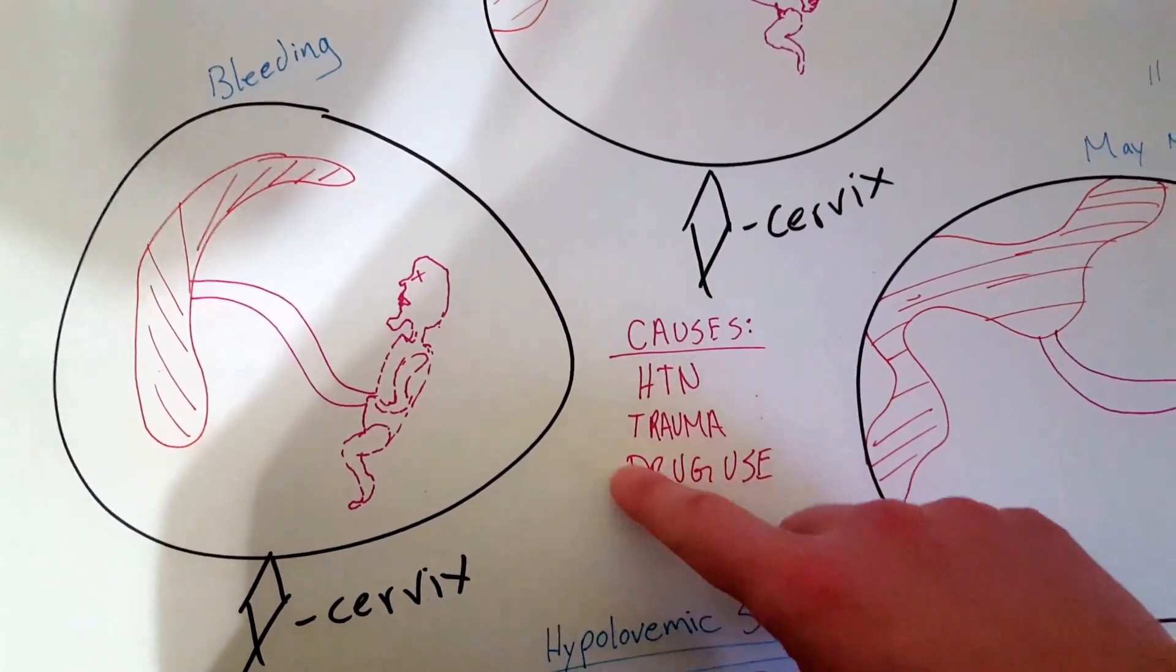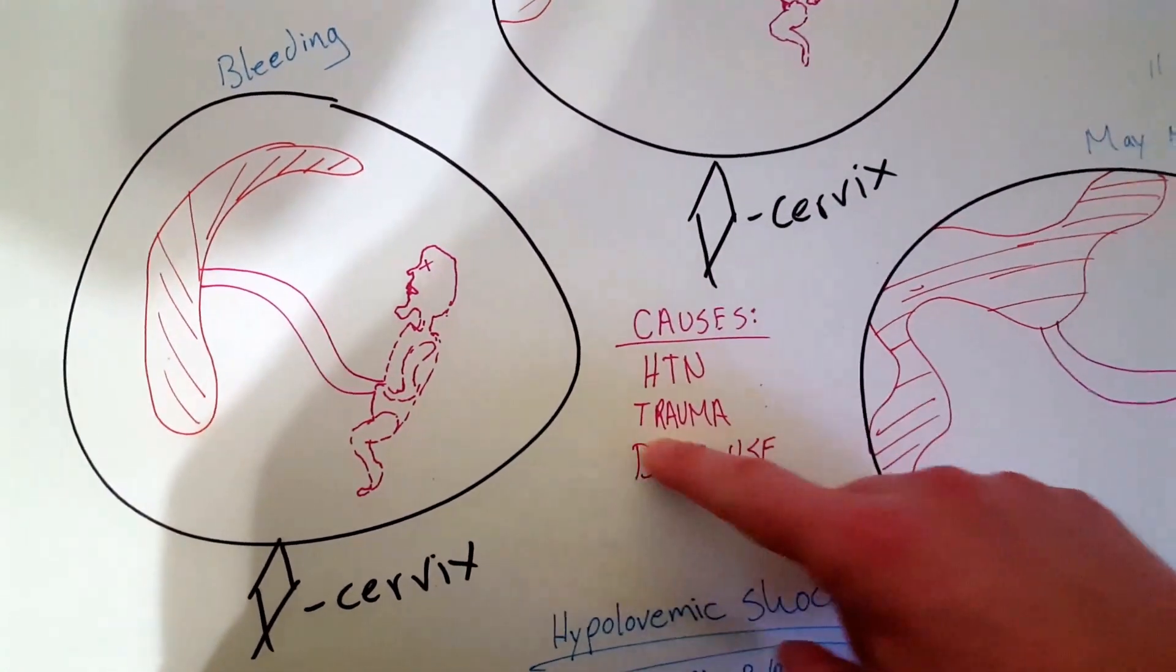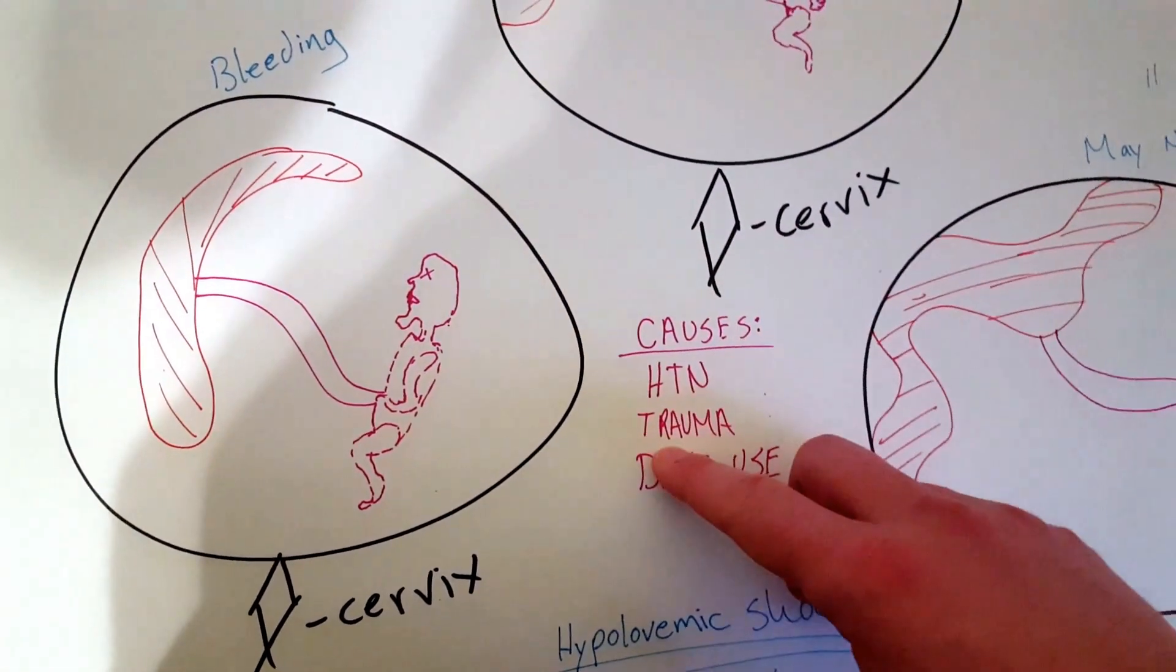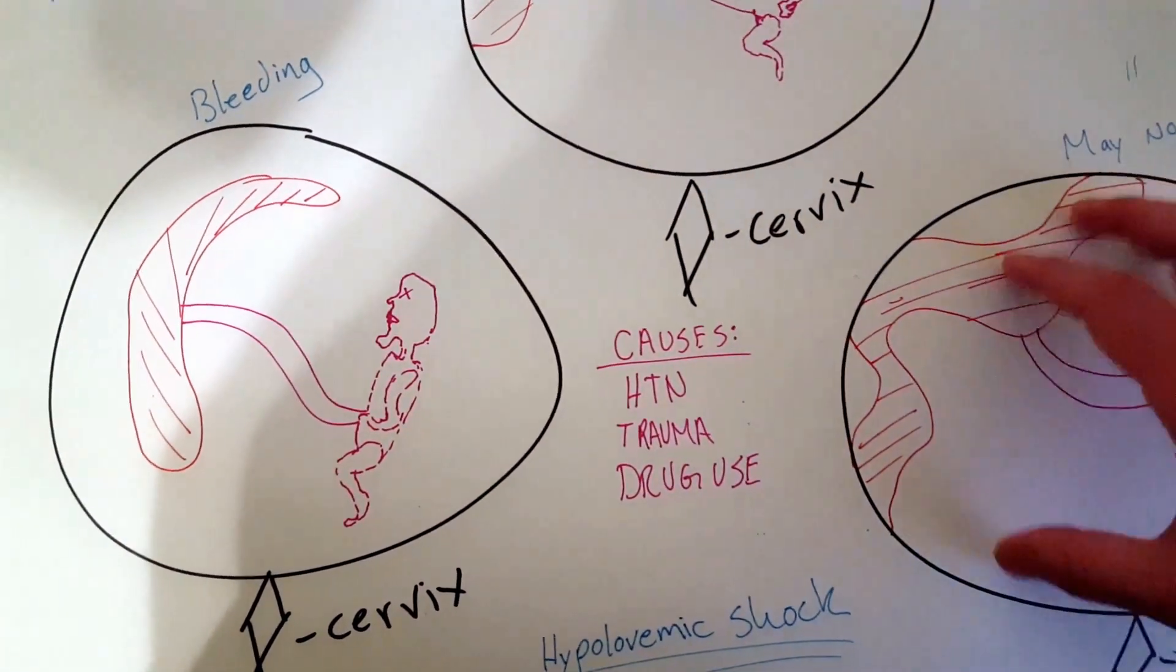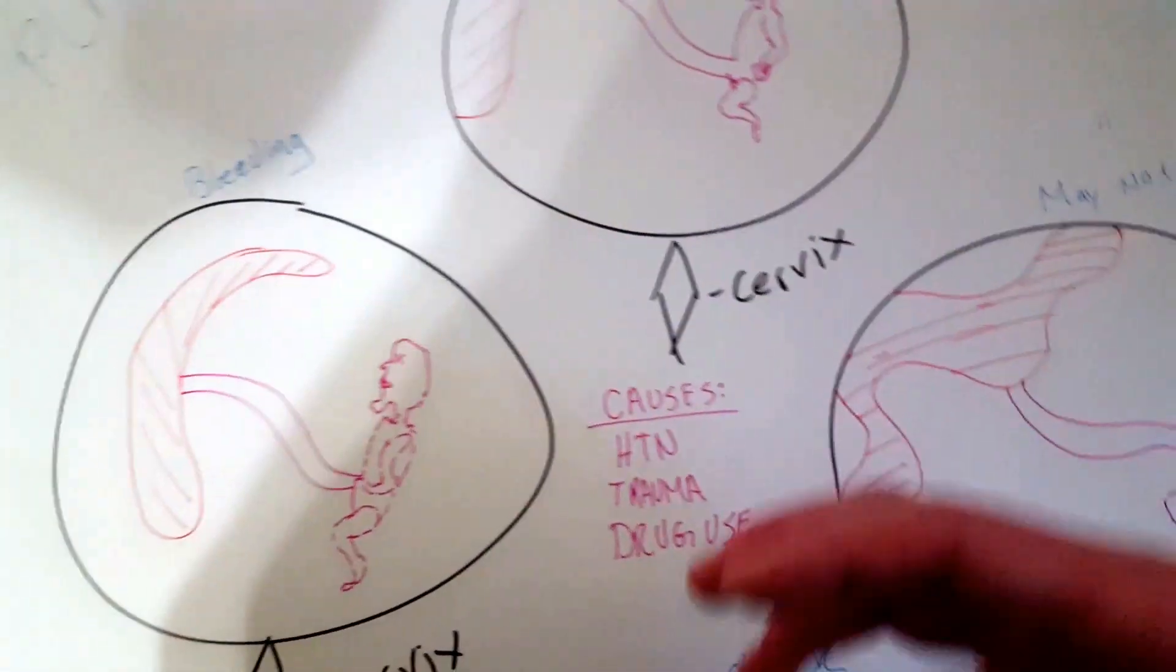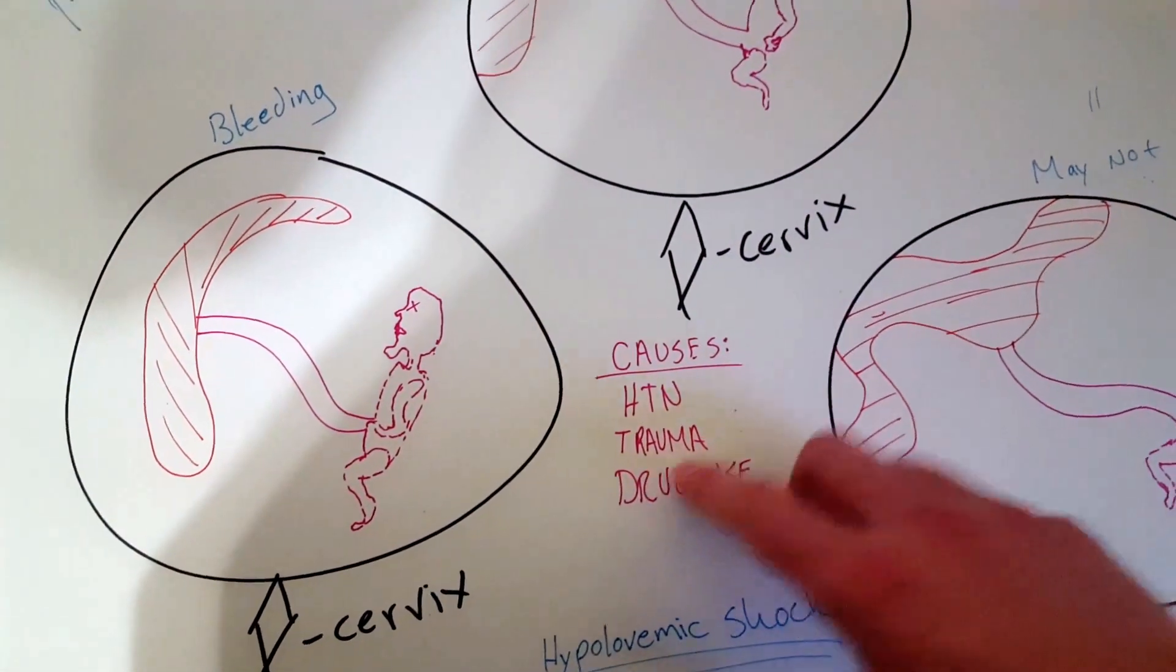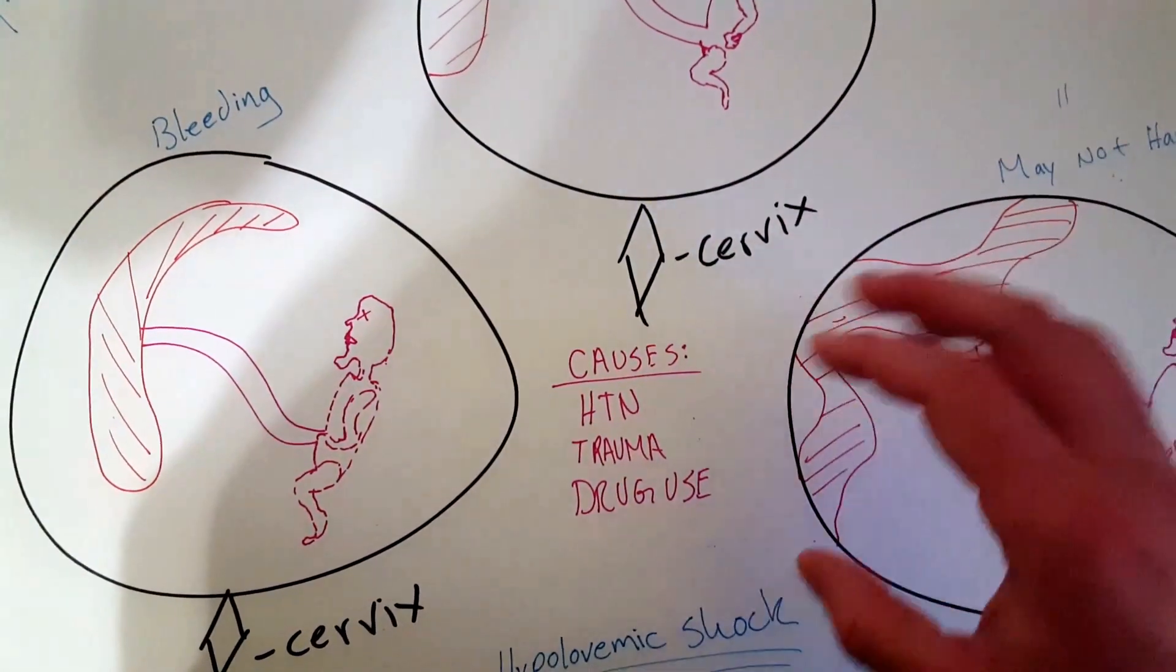But in EMS, the one you'll come across more is trauma. So if your patient has fallen down the stairs, they were in a pretty bad car accident, that movement will cause the placenta to actually tear.